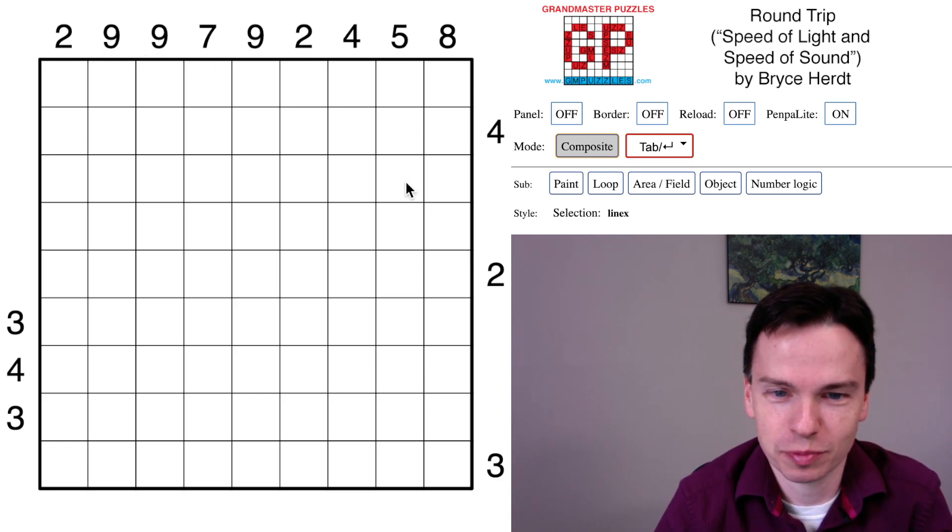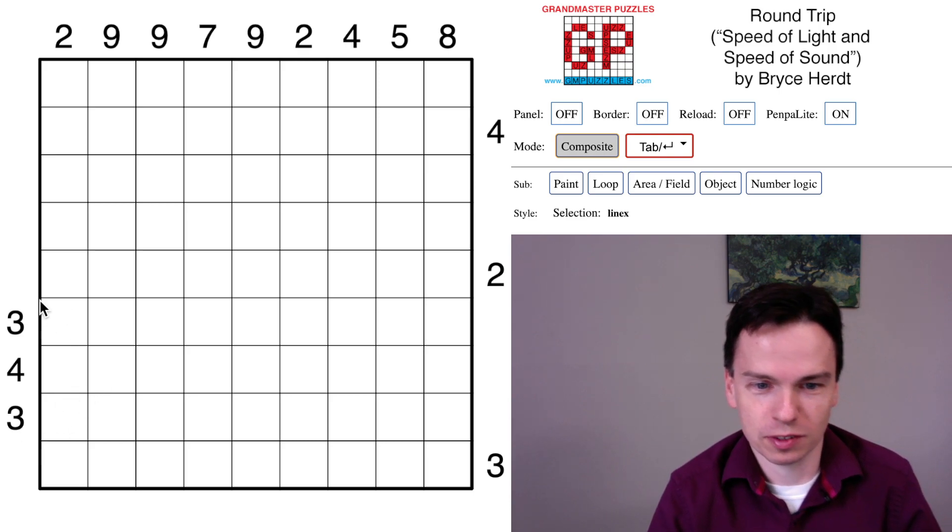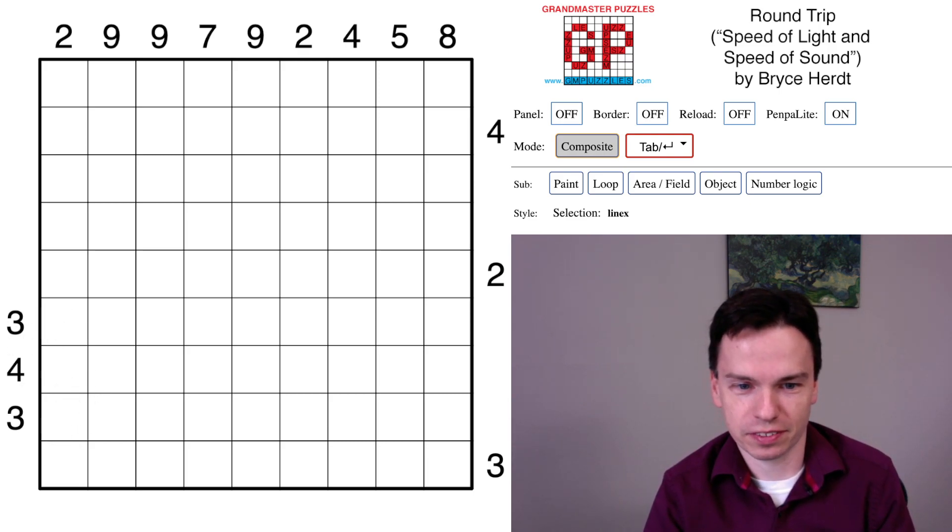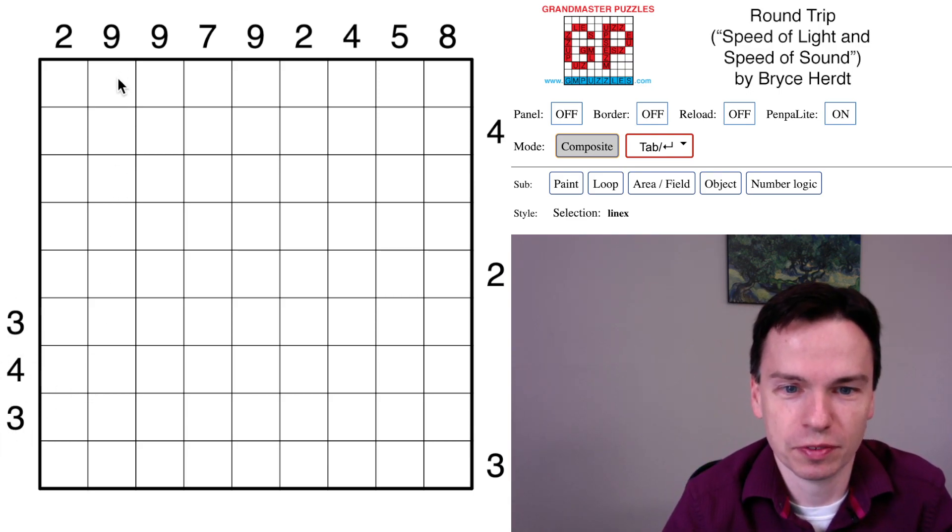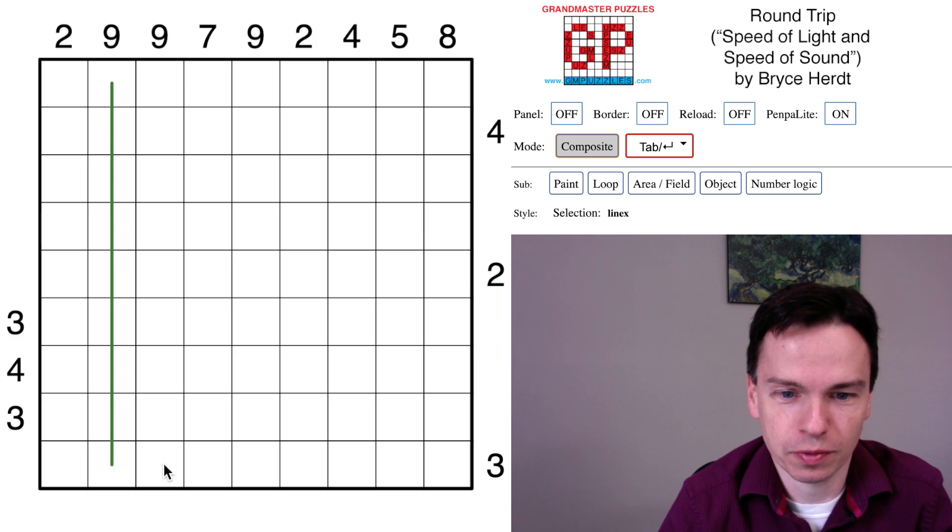It's an interesting start for this puzzle. 343 I remember is the speed of sound. I think there's a particular temperature in dry air where that's the speed, but really I remember it's 343 because it's also seven cubed, so it's a fun number for what it is.